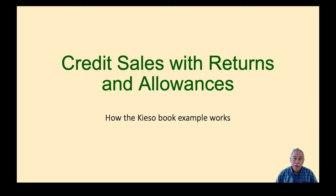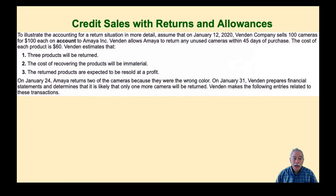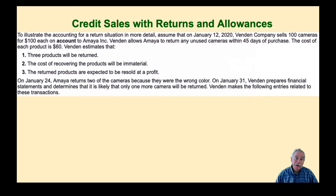We'll start with the KISO approach. The example is that we are Vendin Company. On January 12th of 2020, Vendin sells 100 cameras for $100 each on account to Amea Incorporated. Vendin allows Amea to return any unused cameras within 45 days. The cost of each product is $60, and Vendin estimates that three cameras will be returned.